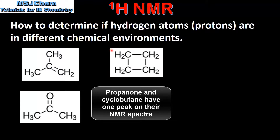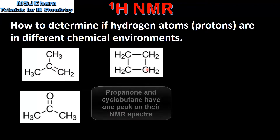Our next example is cyclobutane. In cyclobutane the protons in each CH2 group are in the same chemical environment. This is because each CH2 group in cyclobutane is bonded to two other CH2 groups, which means we have four identical chemical environments in which hydrogen atoms are located.